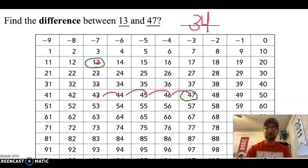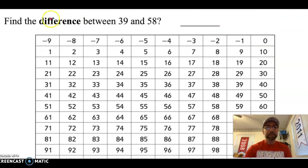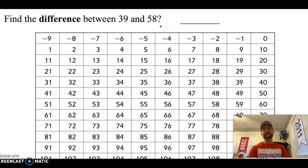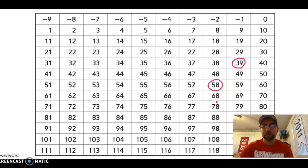Let's try another. Find the difference between 39 and 58. Now this is a little bit different. It's a little bit different because, well, let's take a look. Go ahead and circle the numbers 39 and 58 on your sheet protector. All right, I found 39 and I found 58.